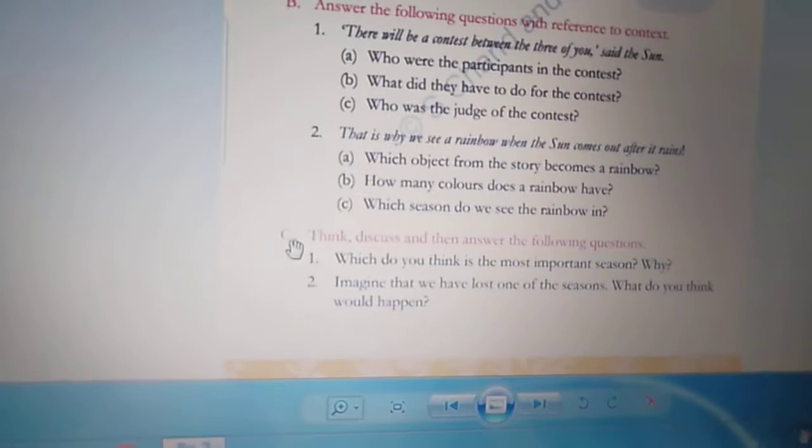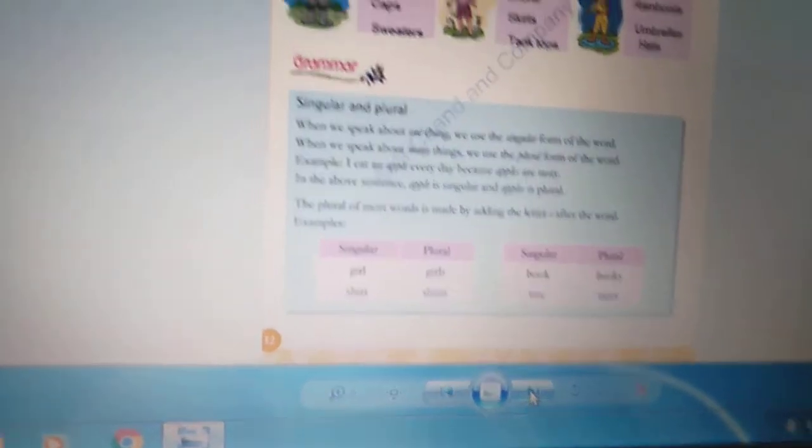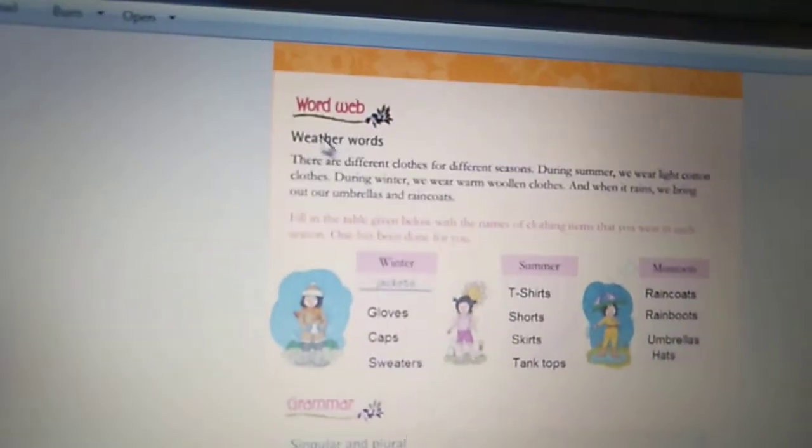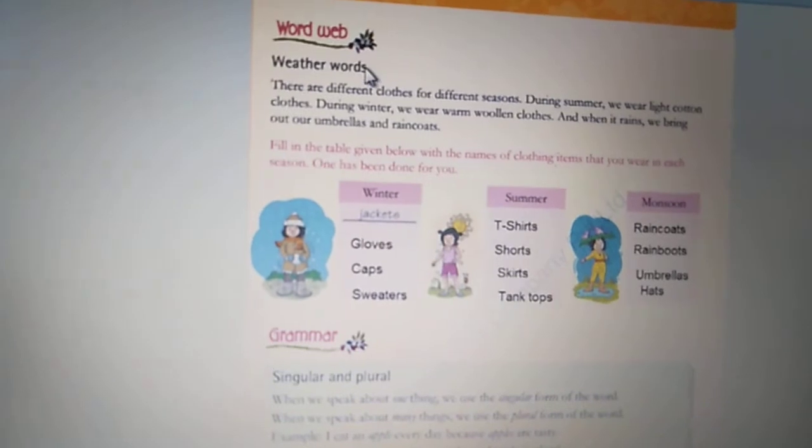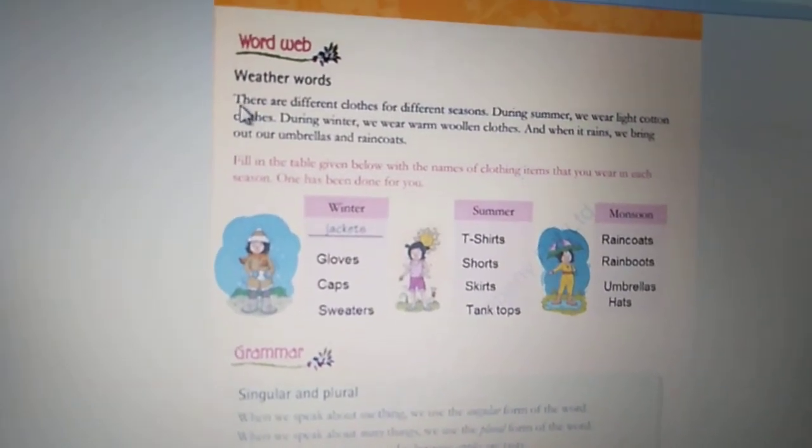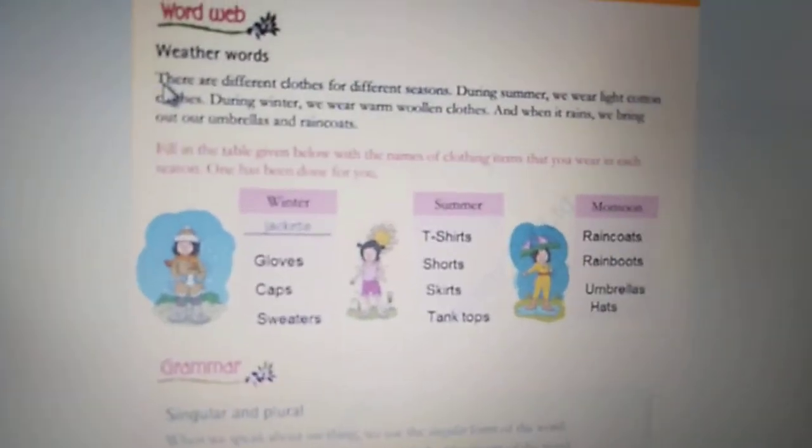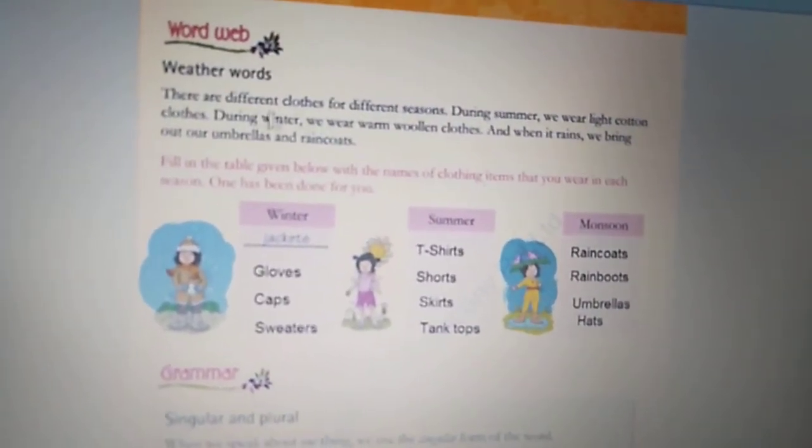Part C we will do when the school reopens. Next is word web, weather words. There are different clothes for different seasons. Alag-alag season mein hum alag-alag kapdai pehnte hai. During summer, we wear light cotton clothes. Summer mein hum cotton clothes pehnte hai.